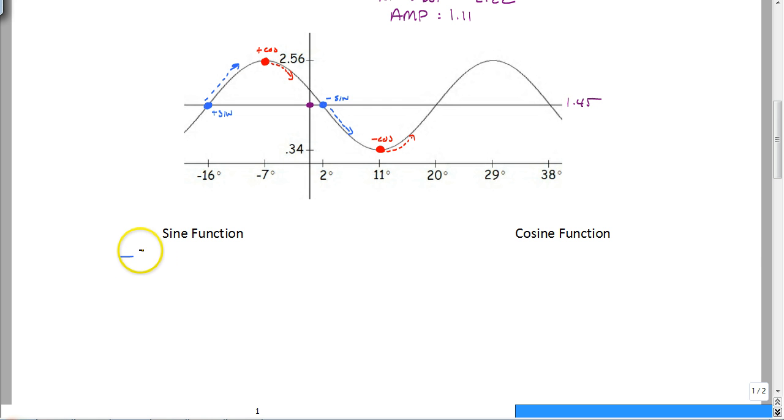So that has a start at negative 16, which we know is less than or equal to theta, which is less than or equal to. And remember, you have to go one complete cycle, which is going to stop you right here at a positive 20.